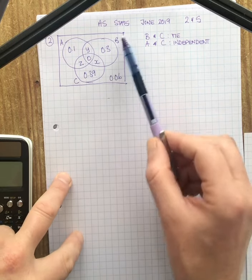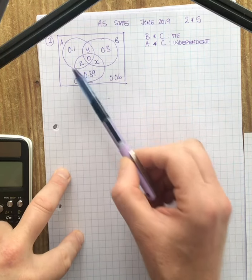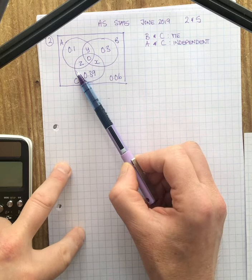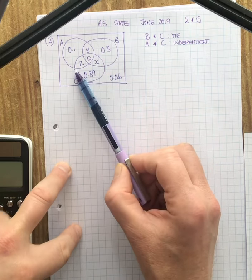They give you a Venn diagram A, B and C. They give you some of the values and you've got X, Y and Z in here. Your task is to find out what X, Y and Z are.